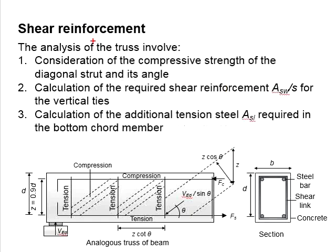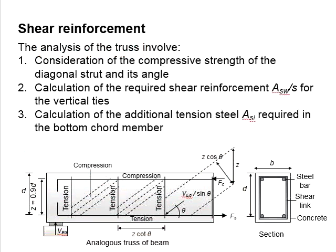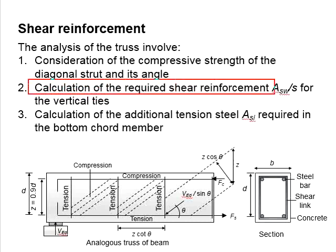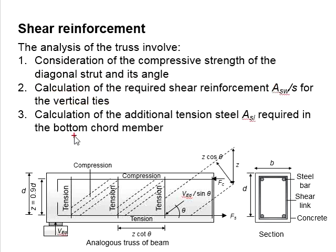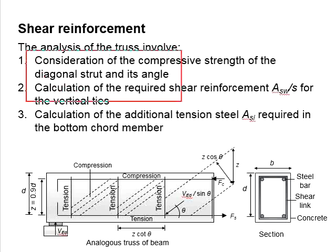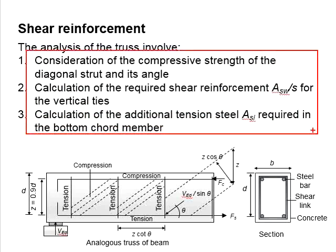The analysis of the truss in the reinforced concrete beam involves considerations of the compressive force, the strength of the diagonal strut and its angle, then calculations of the required amount of shear reinforcement bar for the vertical ties, and then calculating the additional tension area required at the bottom chord member. This shall be explained in the following slides.